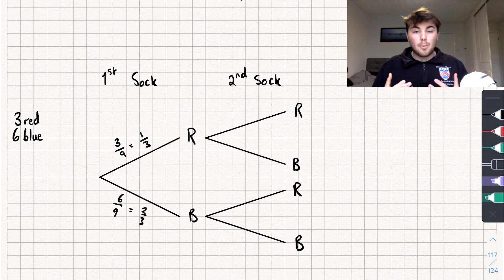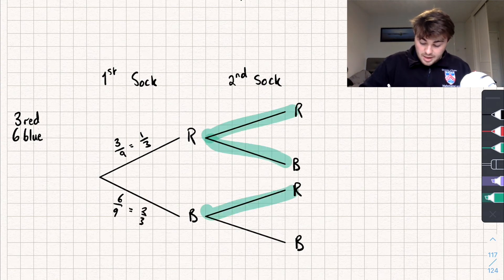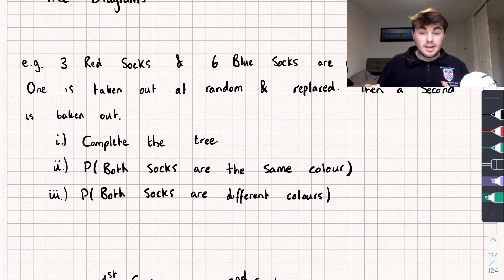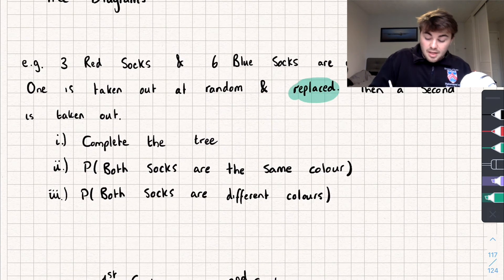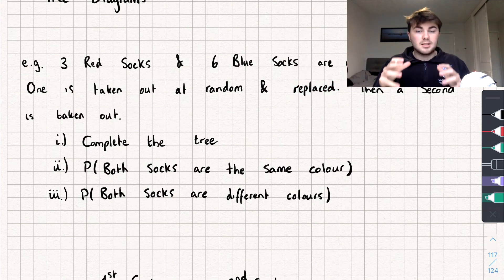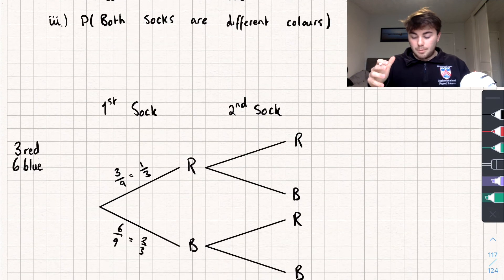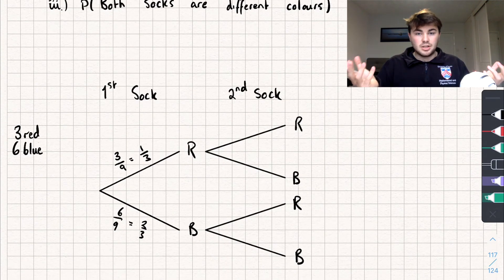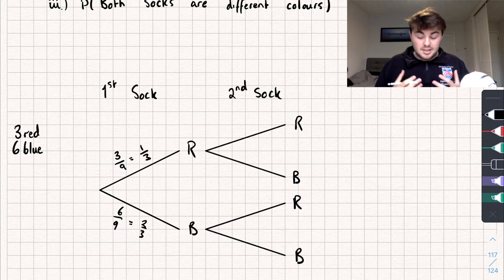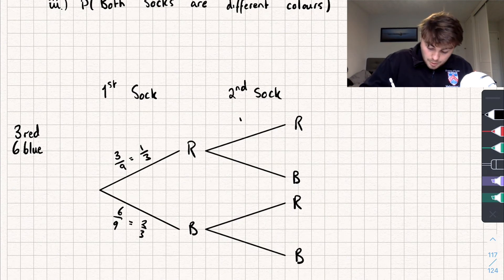Now for the second pick — the question says the sock is replaced, so the probabilities are exactly the same as for the first pick, because nothing has changed. These are essentially independent events. So for the second pick, red is still one third and blue is still two thirds. Let's fill that in.